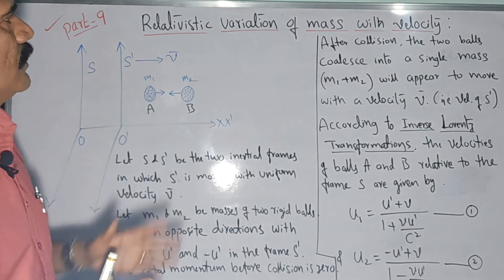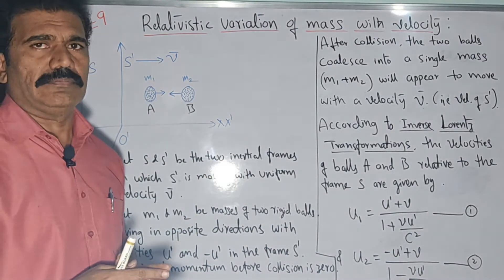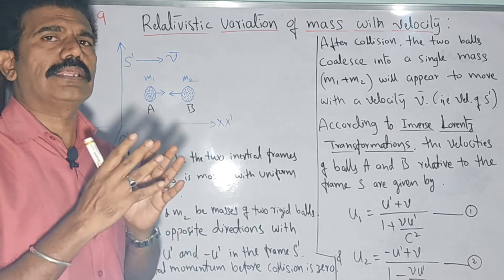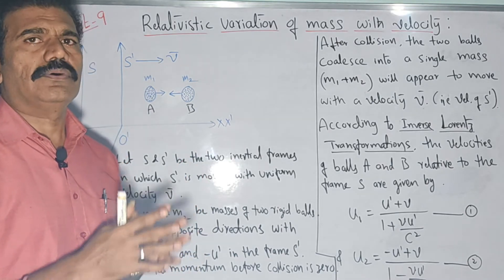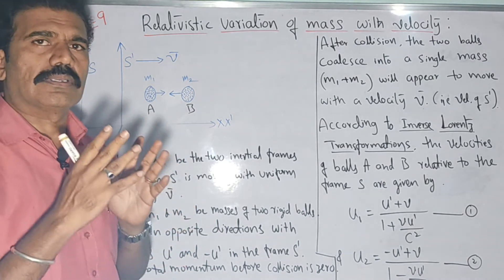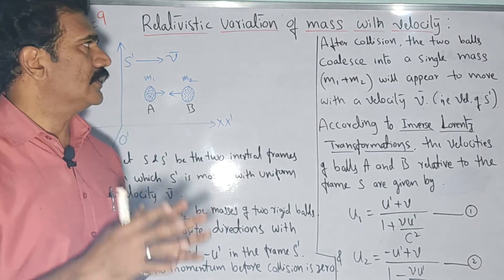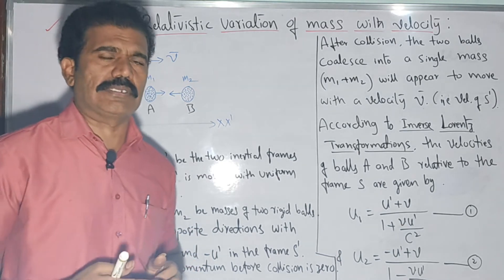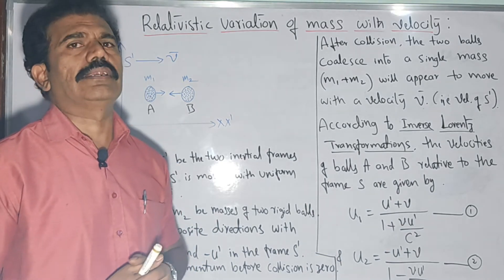So far we have understood that the mass of a body is always an invariant quantity according to Newtonian mechanics and even according to the Galilean transformation equations. We have the knowledge that mass of a body is always constant — it is an invariant quantity.